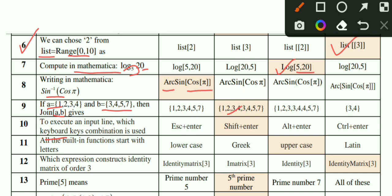MCQ number 11: All built-in functions start with an uppercase letter. The correct option is C. MCQ number 12: Which expression constructs an identity matrix of order 3? The correct option is D - IdentityMatrix[3].